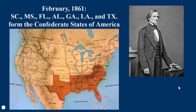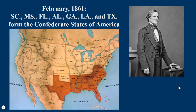They elect Jefferson Davis as president of the new Confederate States of America and draft their own constitution, ripped directly from the U.S. Constitution but with much clearer language on slavery. The Confederate constitution makes explicitly clear that the institution of slavery shall not be infringed upon — even more explicit than the U.S. Constitution, which itself is forever stained by language that permits slavery.